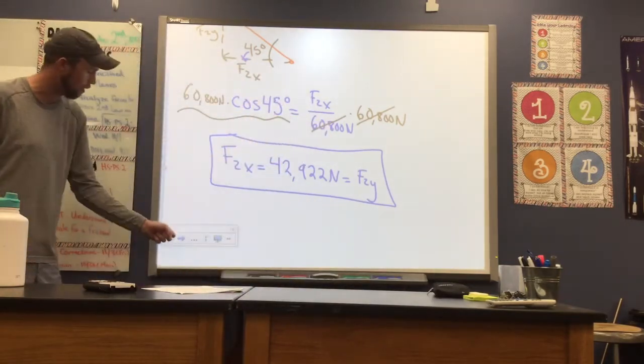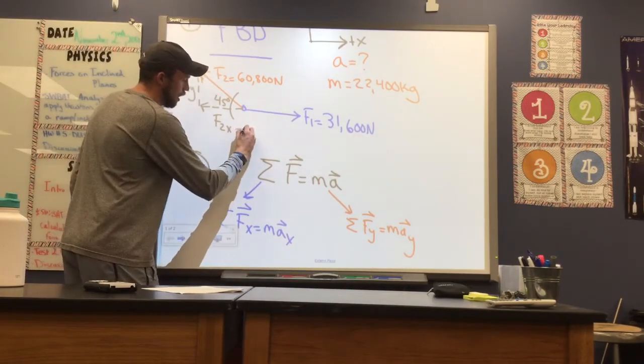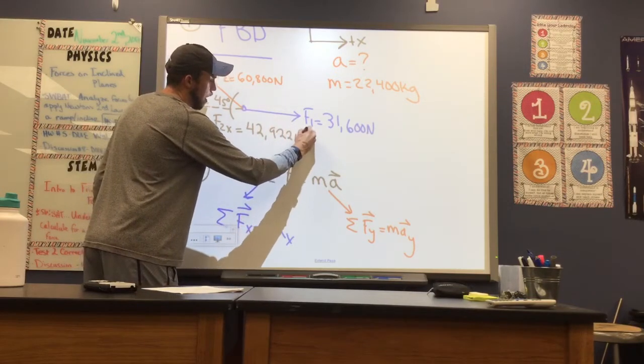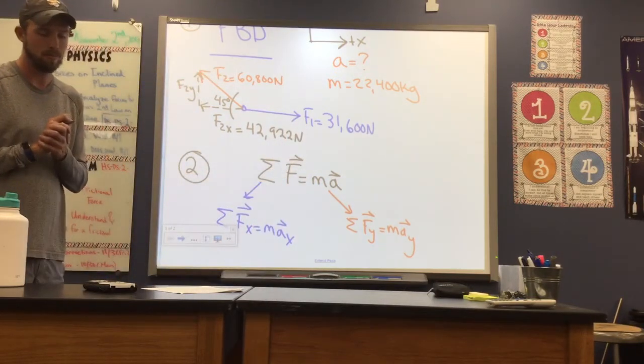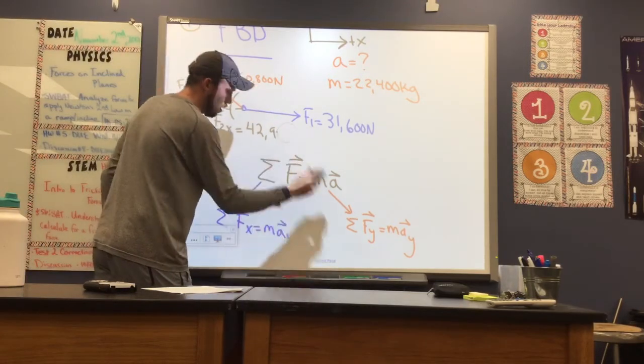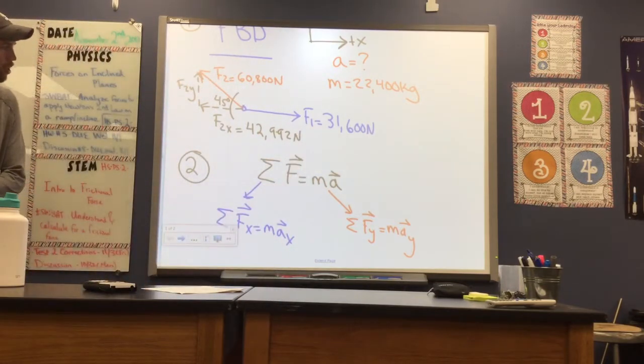So I'm going to take this value and come back to our previous page. We now know that F2 in the X equals F2 in the Y, which is 42,922 newtons. Excuse me, it's 992, I apologize. I was reading some numbers wrong. 42,992.